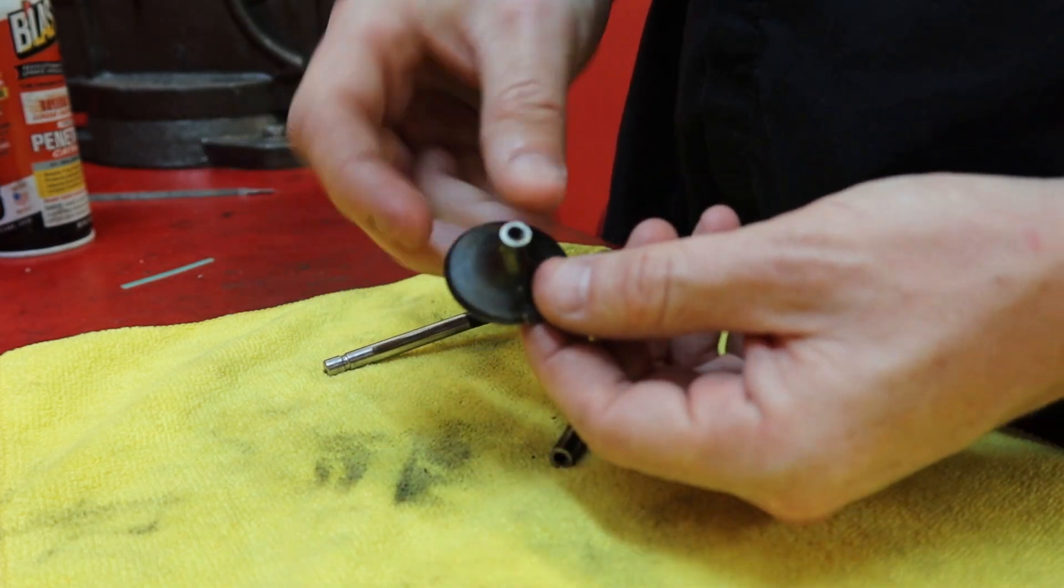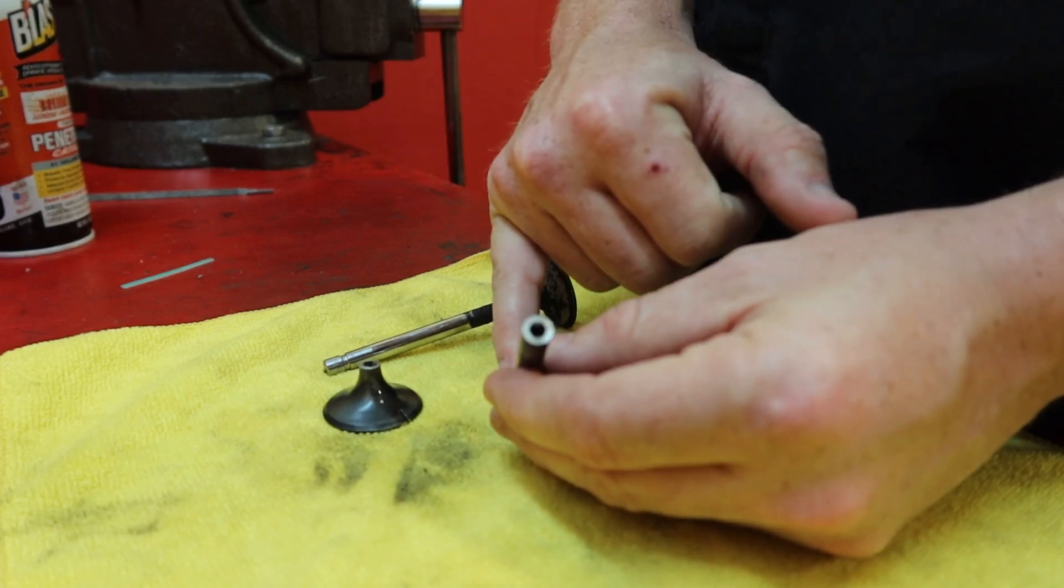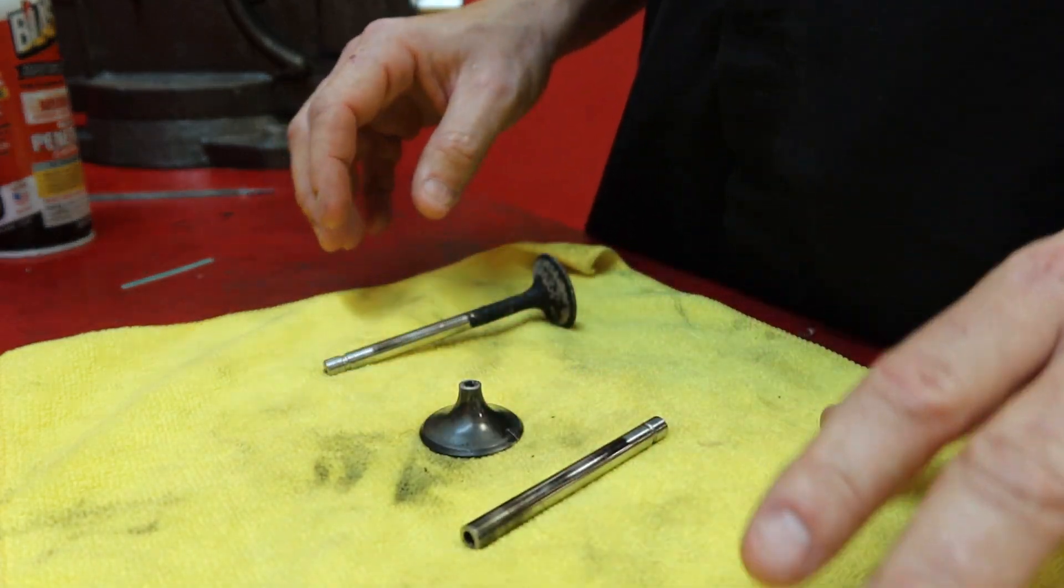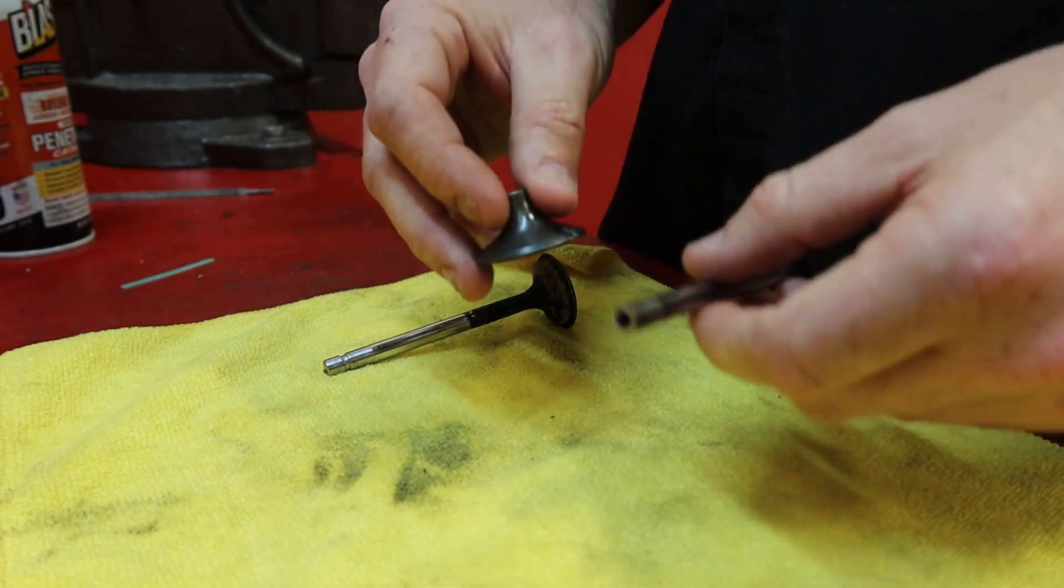There's also sodium down the stem. Now the reason for that is to displace heat. It helps prevent the valve from becoming warped or fragile based on the amount of heat that it absorbs during running ability, and that's about all there is to it.